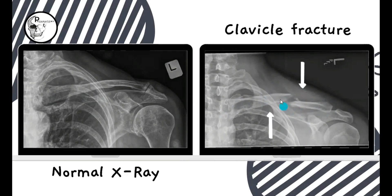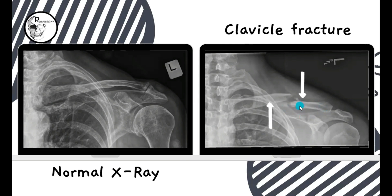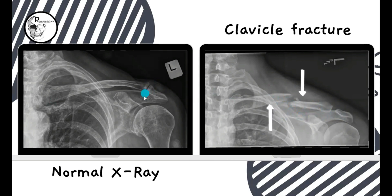So this is the commonest way of displacement after a clavicular fracture: the fracture happens at the site where the medial two-third of the shaft joins with the lateral one-third, the medial piece is displaced upwards by the pull of the sternocleidomastoid, and the lateral piece is displaced downwards due to the weight of the upper limb. One more finding to observe here is the acromioclavicular joint — in the normal X-ray the joint space was very thin, but here there is a considerable increase in joint space due to subluxation of the acromioclavicular joint. This is how you can diagnose the clavicular fracture on an X-ray.